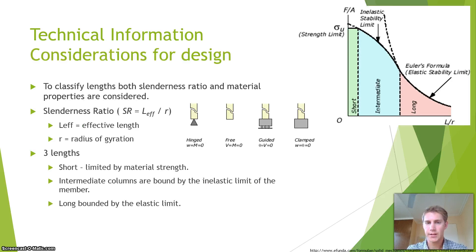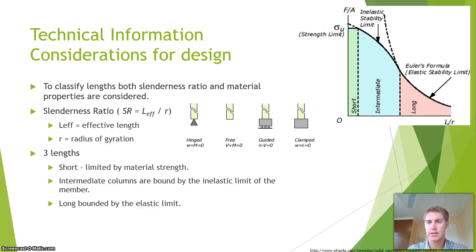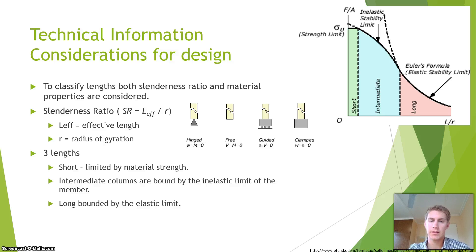Other considerations for design: shorter columns are limited by their material strength — concrete, steel, and wood all have different material strengths. Intermediate columns are bound by the inelastic limit of the member, and long columns are bounded by the elastic limit. To classify the lengths, both slenderness ratio and material properties need to be considered. The slenderness ratio takes the effective length into consideration. The effective length has boundary conditions related to hinge fitting, being a free column, being guided, or being clamped or fixed.